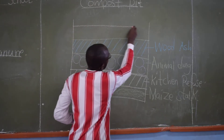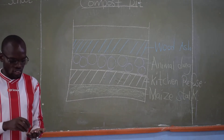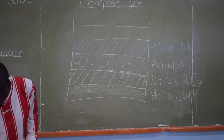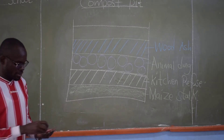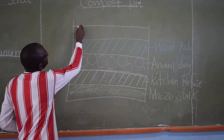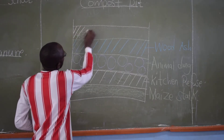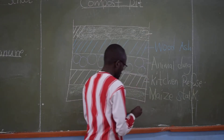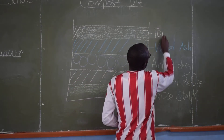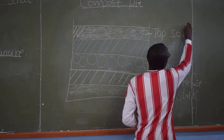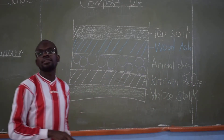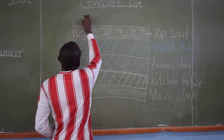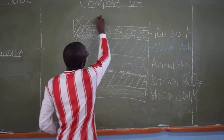Then the next layer can be top soil. And at the very top we have something known as dry grass.